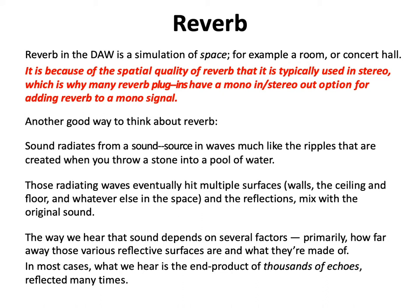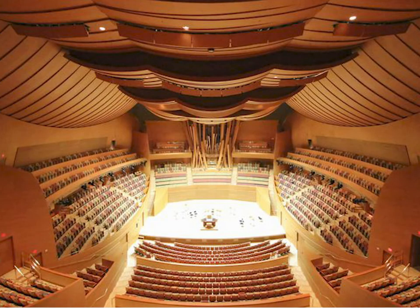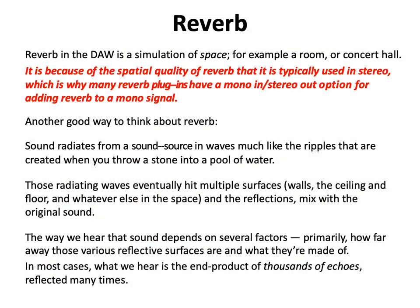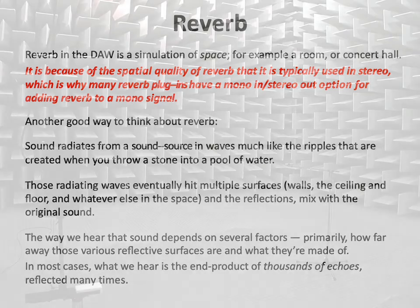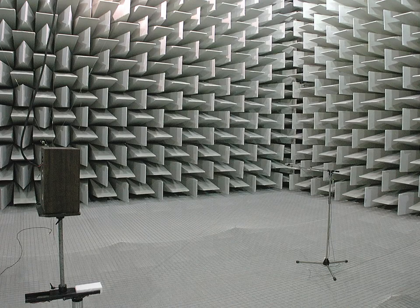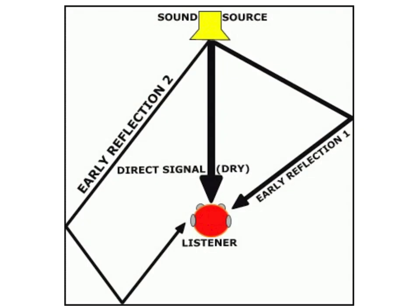The way we hear sound depends on several factors, primarily how far away various reflective surfaces are and what they're made out of. In most cases, what we hear is the end product of thousands of echoes reflected many times. What we hear is the direct sound plus its reflections, because there is no natural space where reflections aren't present. The only thing that comes close is a man-made room called an anechoic chamber, and even that has limits.